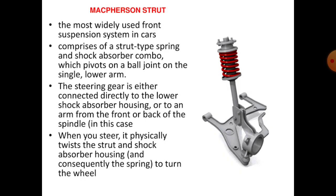The McPherson strut is the most widely used front suspension system in cars. It comprises a strut-type spring and shock absorber combo which pivots on a ball joint on the single lower arm. The steering gear is either connected directly to the lower shock absorber housing or to an arm from the front or back of the spindle. When you steer, it physically twists the strut and shock absorber housing to turn the wheel.